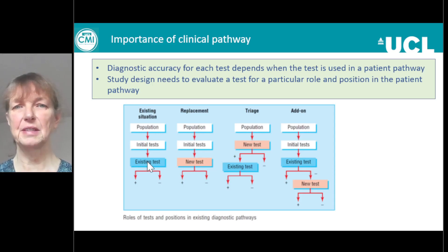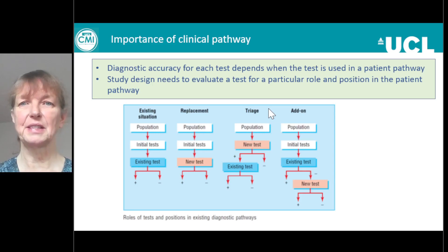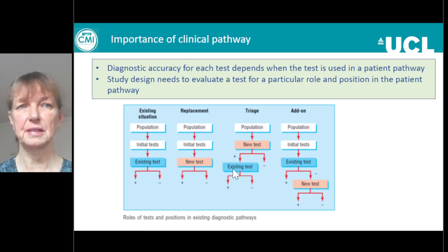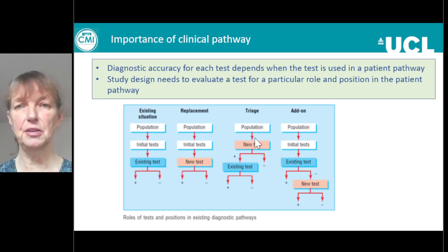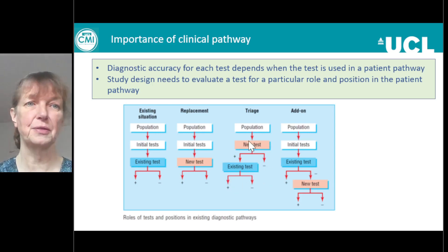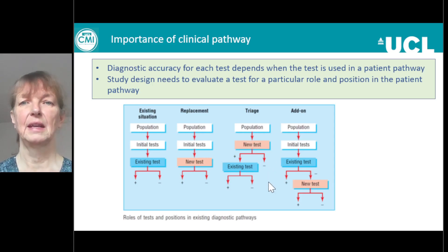In the replacement study, all we've done is switched the existing test — the blue box — for the orange box with the new test. People come in, have the same initial tests, and then have the new test instead of the old one. A further design is using the test as a triage test for the existing test, meaning we use the new test in advance of the existing test to decide who gets the existing test. Everyone who's positive with the new test gets the existing test, though for different diseases the negative group might get it instead.